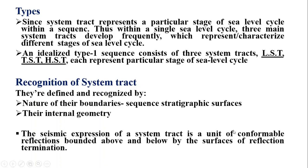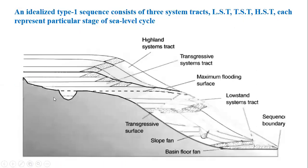The seismic expression of a system track is a unit of conformable reflections bounded above and below by surfaces of reflection termination. In a seismic section, a system track is identified as a unit of conformable reflections bounded at the top as well as at the base by surfaces of reflection termination. In the idealized type 1 sequence, the various system tracks are separated from one another by these dark lines.